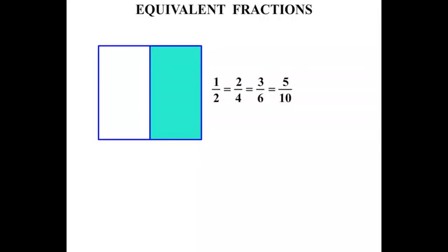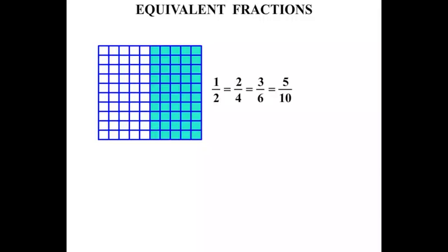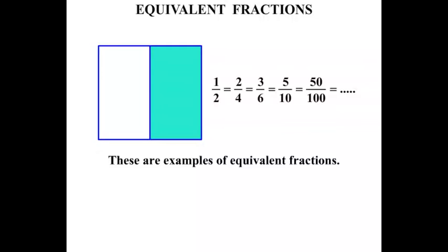Now we could continue on this way. We could break it up into 100 pieces. And if you were to count them, you'd find that 50 are shaded, so 50 hundredths. And we could continue on that way. So these are all examples of equivalent fractions.